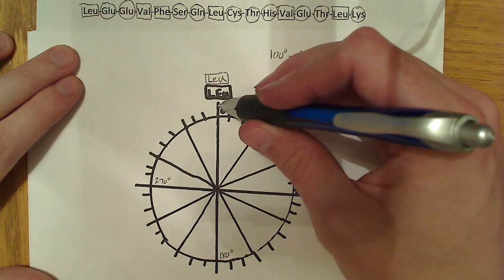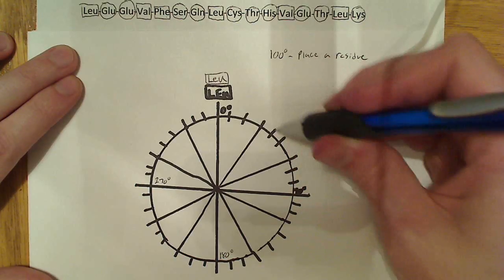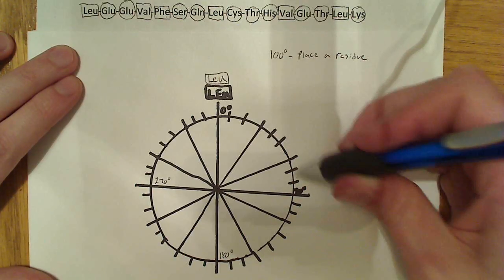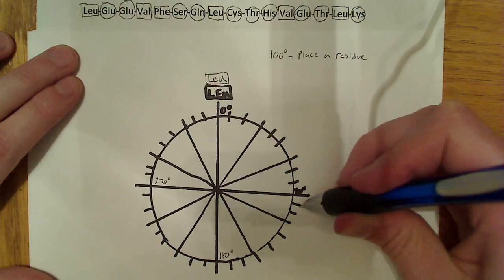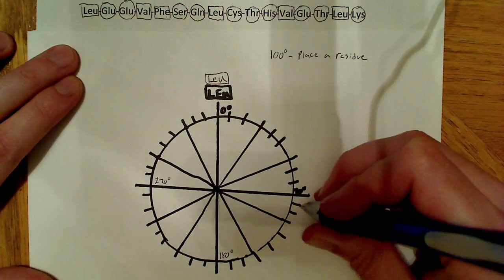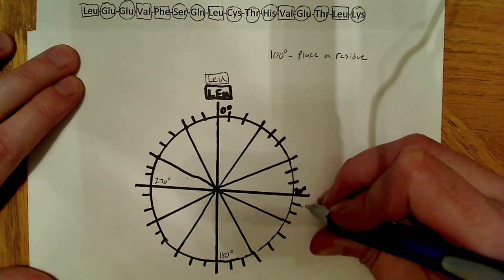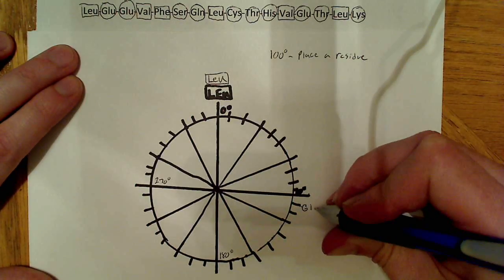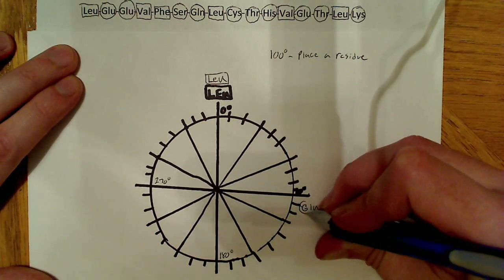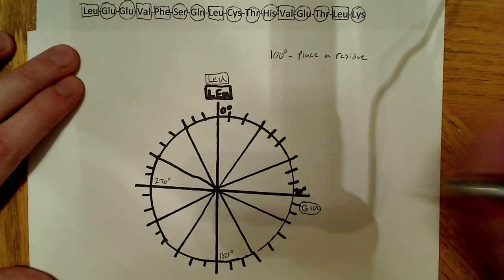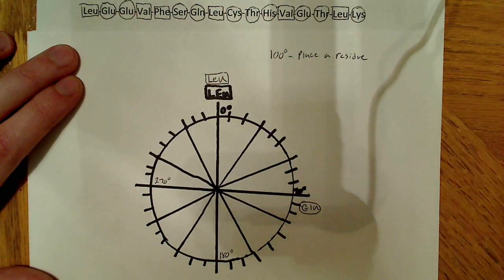So, if you look here, this is zero degrees. This is 10, 20, 30, 40. So, that's 90. And, this is 100 right here. So, that's where I'm going to put my GLU. And, I'm going to put a circle around it, like they indicated. So, again, we're going to go 100.